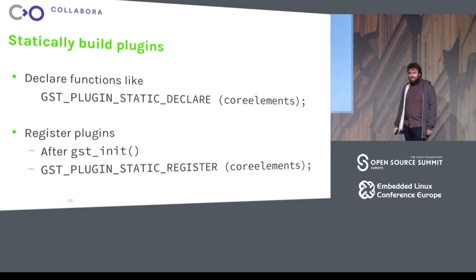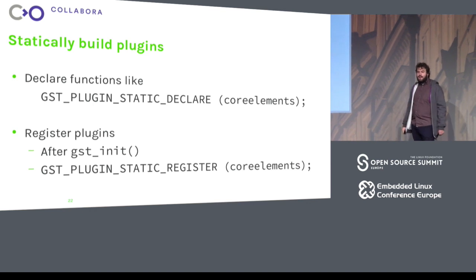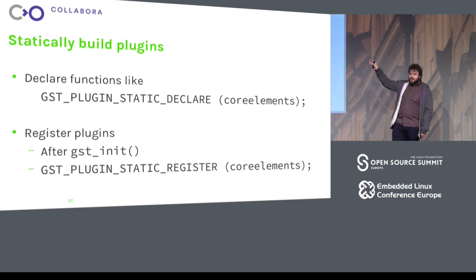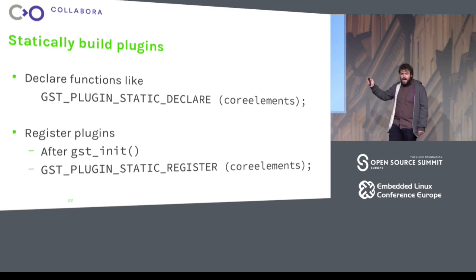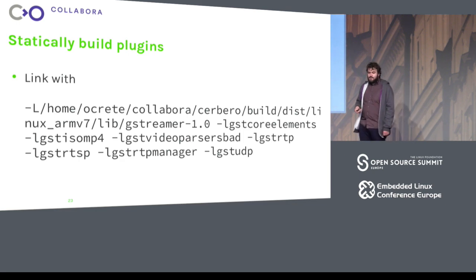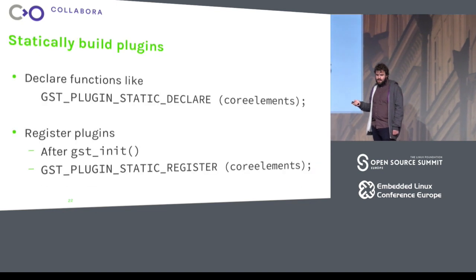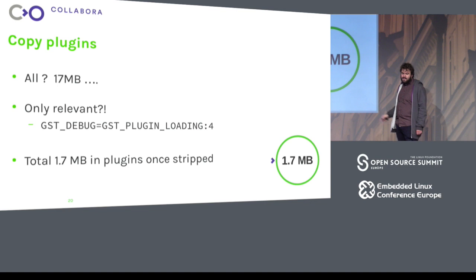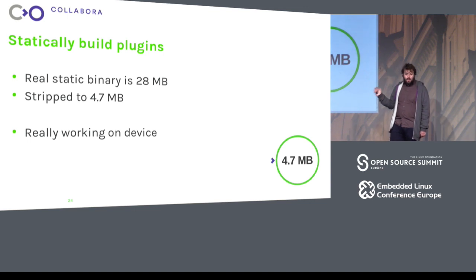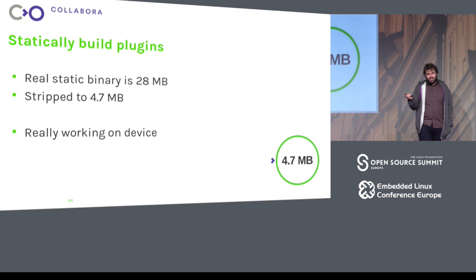I decided to statically link the plugins so that they bring in all the libraries. GStreamer plugins don't come with header files, so you need a static declaration like the GST_PLUGIN_STATIC_DECLARE macro in your C file, then register them with GST_PLUGIN_STATIC_REGISTER. You use the right linker commands with -L flags for the library names of all the plugins. The result was a binary stripped to 4.7 megabytes, and that actually works on the device. So we're getting somewhere — we have something that works, though it's still a bit big.